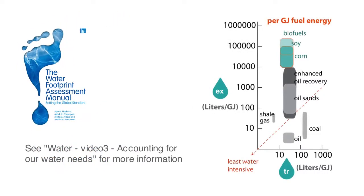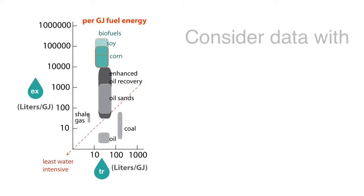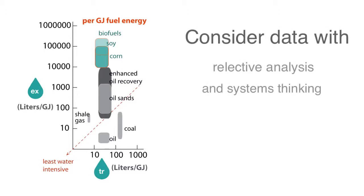These data illustrate that one must use reflective judgment and systems thinking when considering numbers. The numbers only tell part of the story. In this case, the data show the connection between energy production and water use, but they only tell part of the story since it neglects the water needed to deal with the emissions from the extraction and transformation processes.